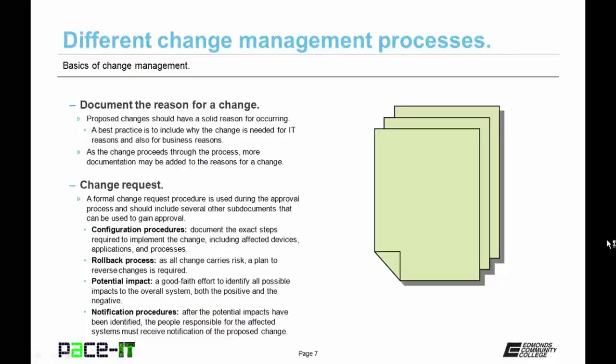Let's talk about the change request. A formal change request procedure is used during the approval process and should include several other sub-documents that can be used to gain approval. One of those documents is the configuration procedures document. These document the exact steps required to implement the change, including affected devices, applications, and processes.